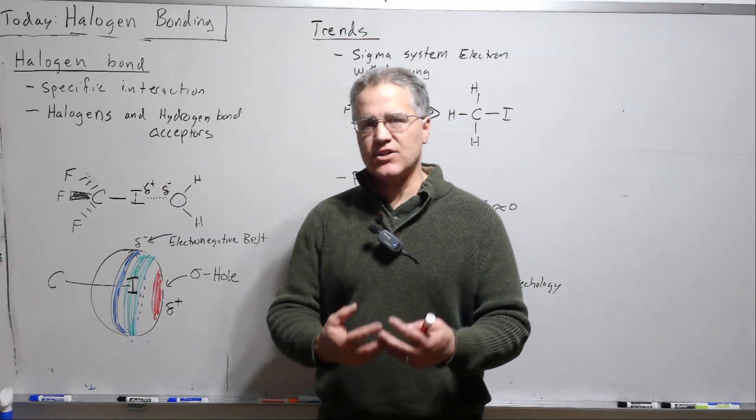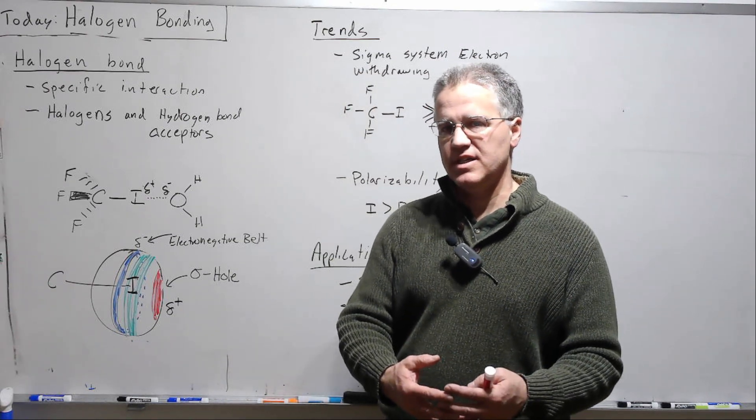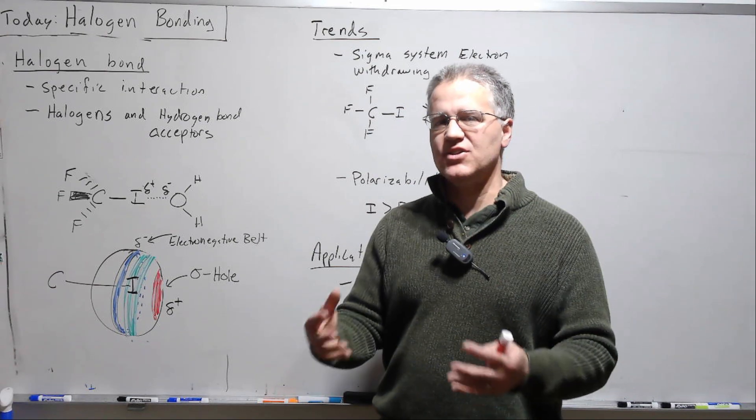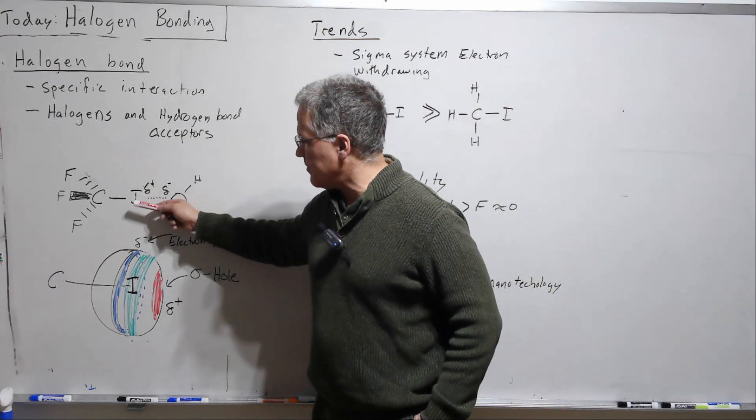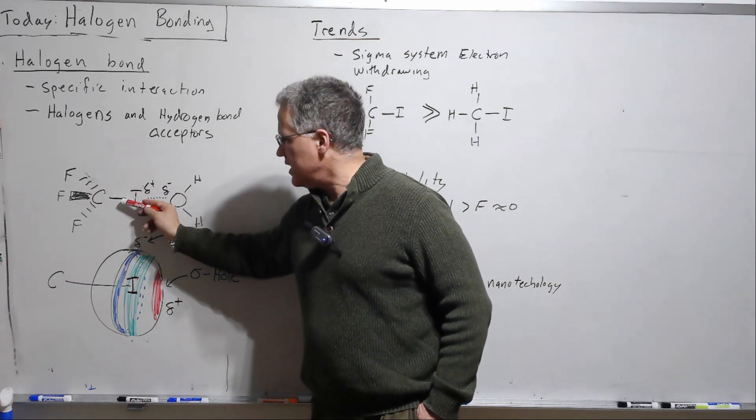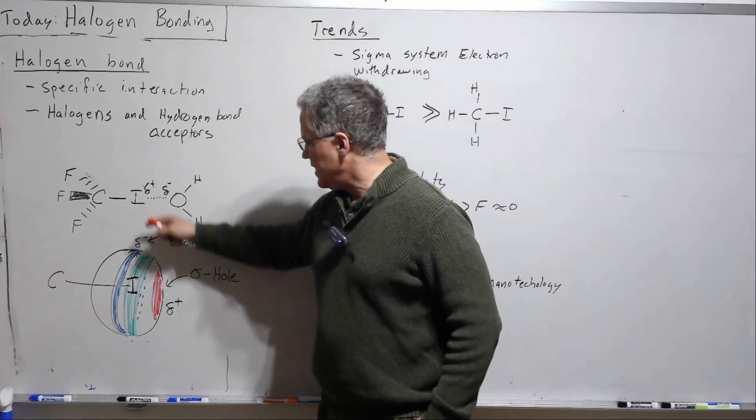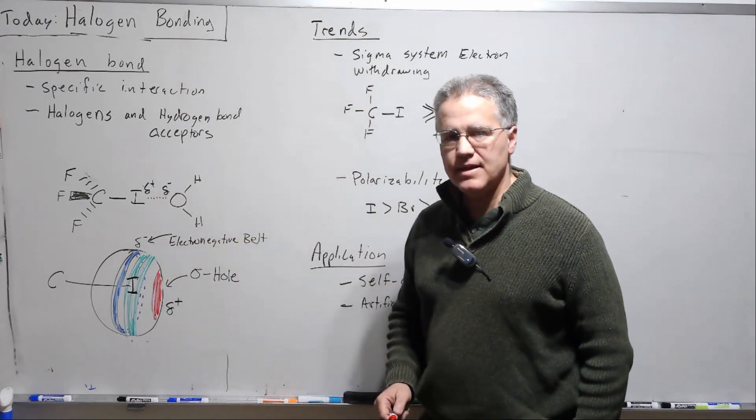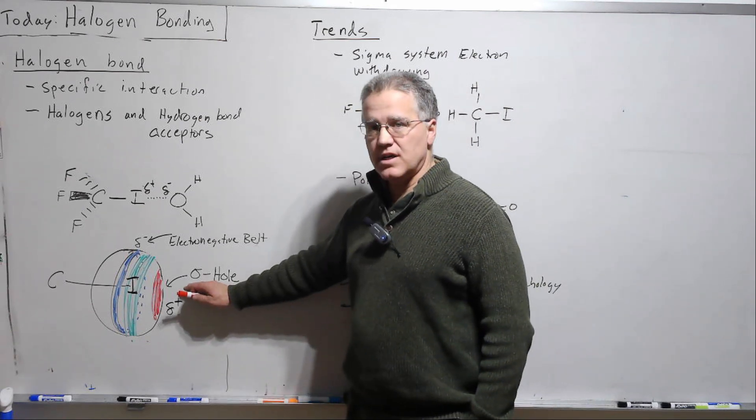A region of electropositivity, so a partial positive region. So we often think about the halogens as being electronegative, but the back side of this sigma bond, particularly if there are strong withdrawing groups over here, then will expose the nucleus leaving a partial positive region. And that is called a sigma hole.